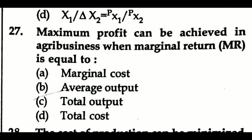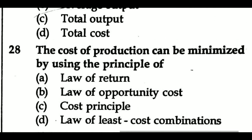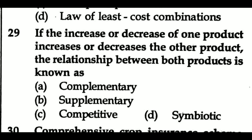Question 27: Maximum profit can be achieved in agribusiness when marginal return (MR) is equal to — Option A: marginal cost, Option B: average output, Option C: total output, Option D: total cost. Question 28: The cost of production can be minimized by using the principle of — Option A: law of return, Option B: law of opportunity cost, Option C: cost principle, Option D: law of least cost combinations. Question 29: If the increase or decrease of one product increases or decreases the other product, the relationship is known as — Option A: complementary, Option B: supplementary, Option C: competitive, Option D: symbiotic.